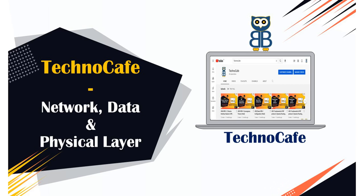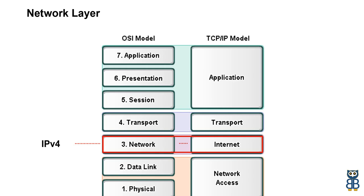The next layer is the Network Layer. The network layer is responsible for routing through an internetwork and for network addressing. This means that the network layer is responsible for transporting traffic between devices that are directly connected or not directly connected. Routers or other layer 3 devices are specified at the network layer and provide routing services in an internetwork.